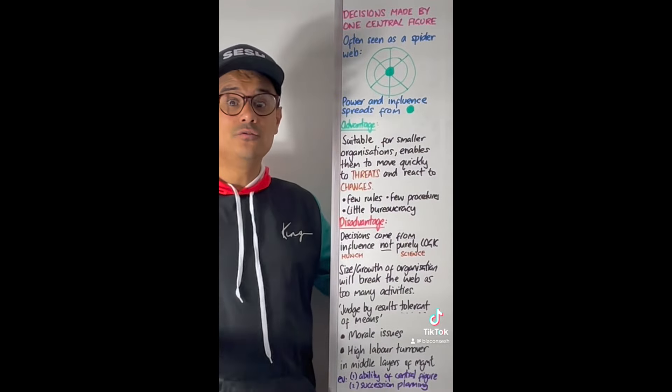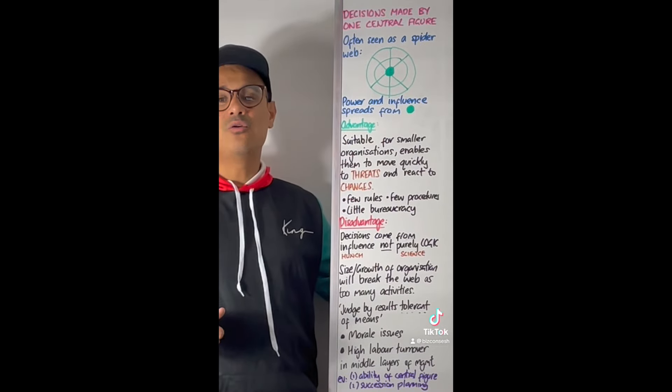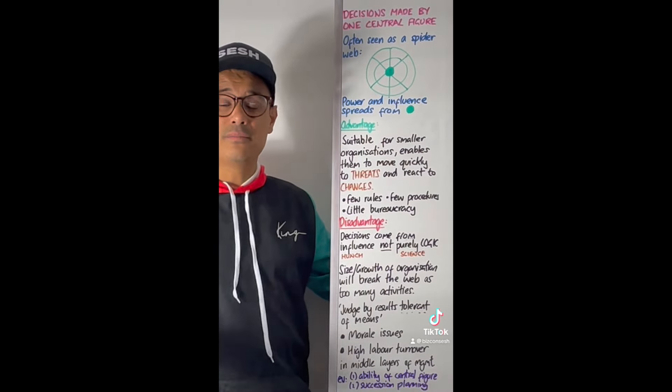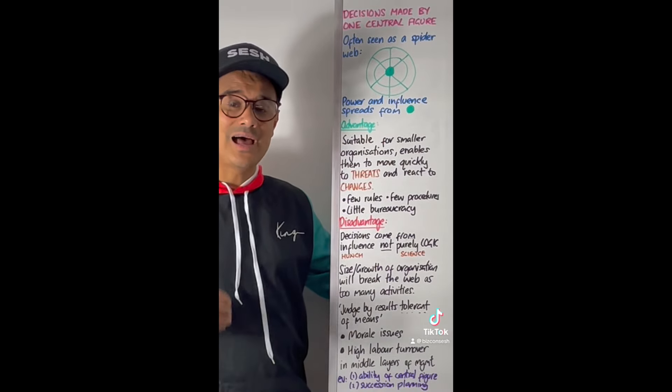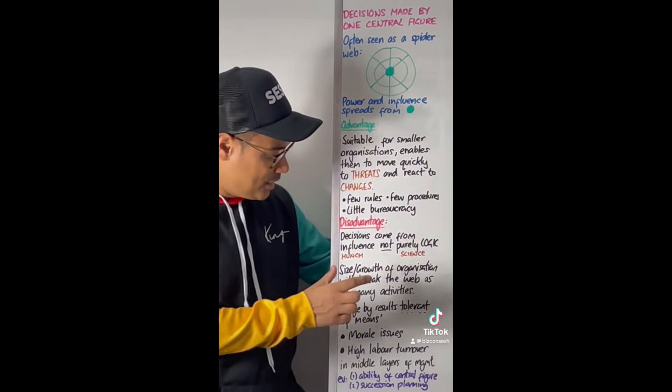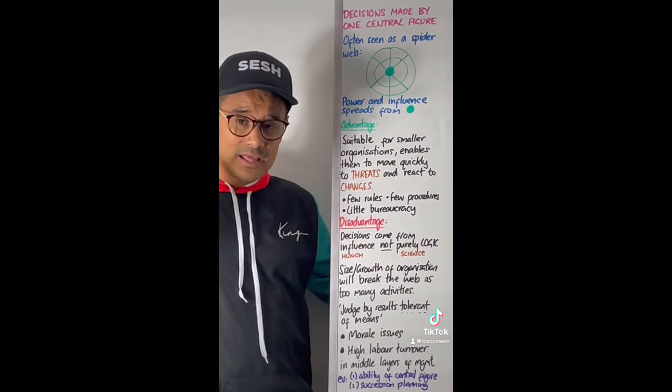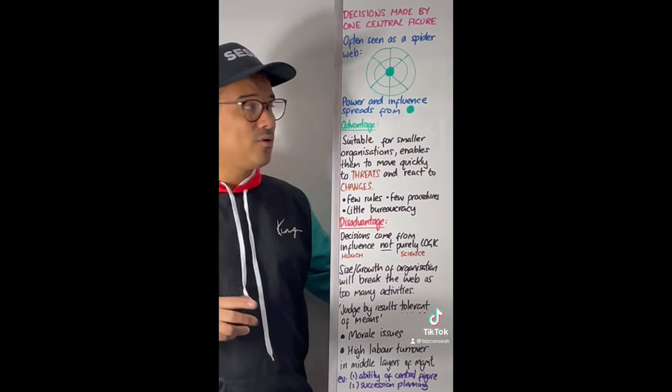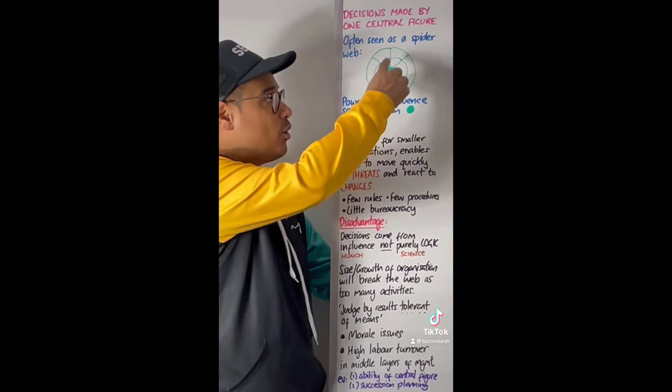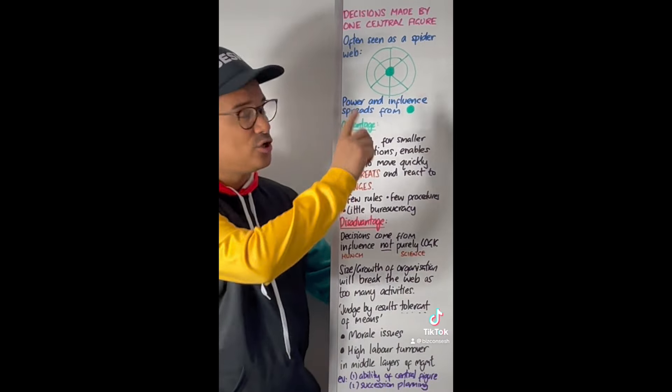A disadvantage of using power culture is that decisions often come from that middle person based on influence, so it's likely they might be made on hunch, on instincts, as opposed to in role culture where they might be based on science, on logic. Another problem is that ultimately if the business grows, more activities are put on that spider web and the spider web breaks because the one centralised person cannot handle everything.